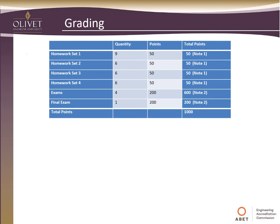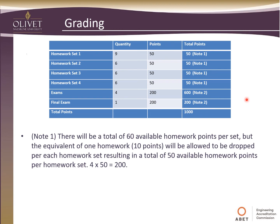Let's talk about grading. The course is broken into four sections, each with its own homework set worth 50 points. There will actually be 60 points available per homework set, but I allow you to drop the lowest problem, equivalent to 10 points, making each set 50 points. Four sets times 50 equals 200 total homework points.